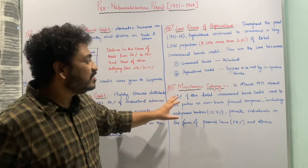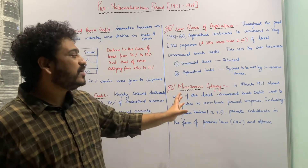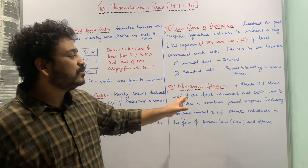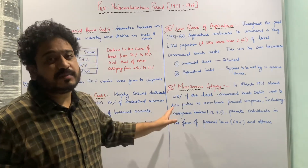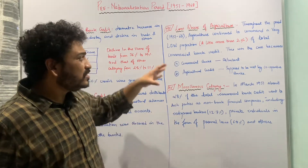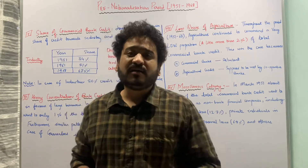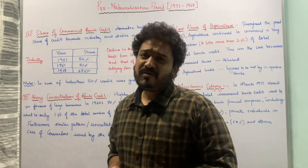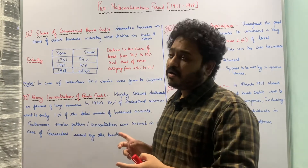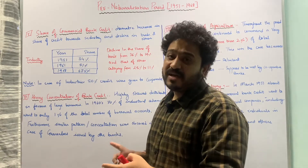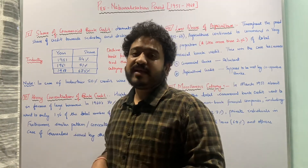So you can see a very different sort of pattern in terms of the share of commercial banking credit during the pre-nationalization period, with credit flowing heavily toward industry and large borrowers while agriculture and trade remained underserved.